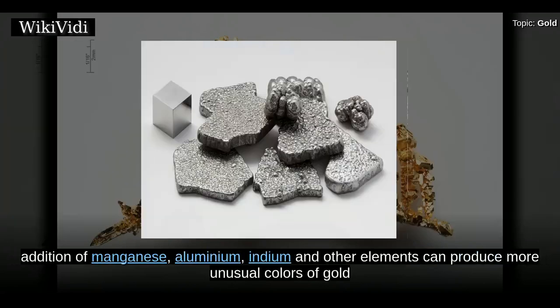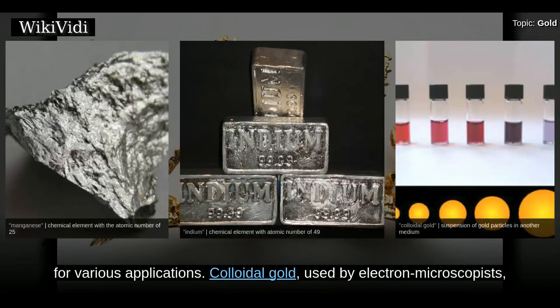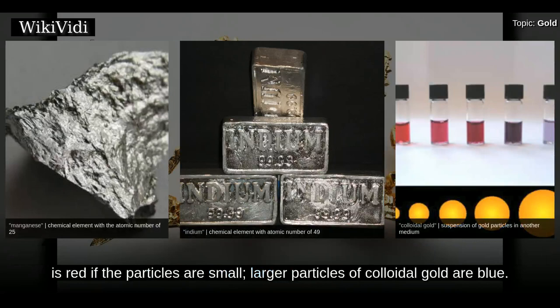Blue gold can be made by alloying with iron, and purple gold can be made by alloying with aluminium. Less commonly, addition of manganese, aluminium, indium and other elements can produce more unusual colors of gold. For various applications, colloidal gold used by electron microscopists is red if the particles are small; larger particles of colloidal gold are blue.